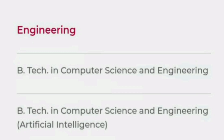If you talk about the different engineering branches available here, there are four computer-related branches. One is B.Tech Computer Science Engineering, and then there is a specialization branch — B.Tech CSE with specialization in Artificial Intelligence.